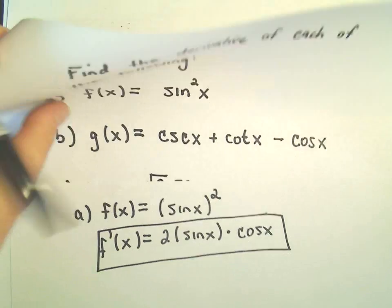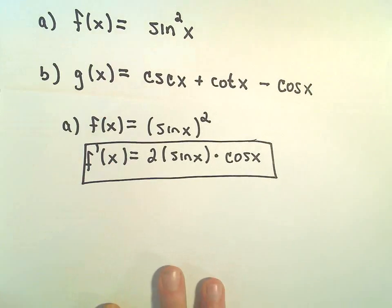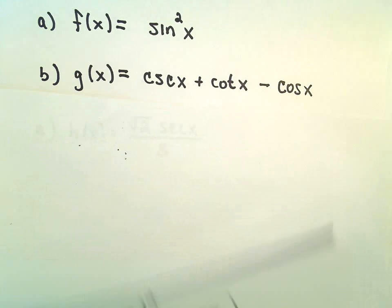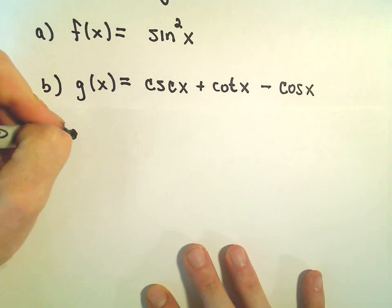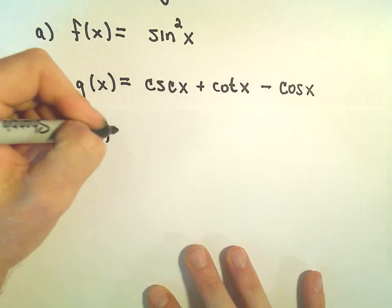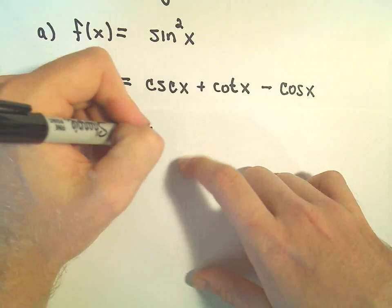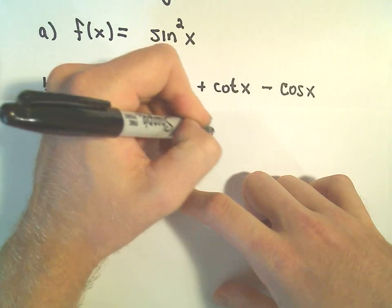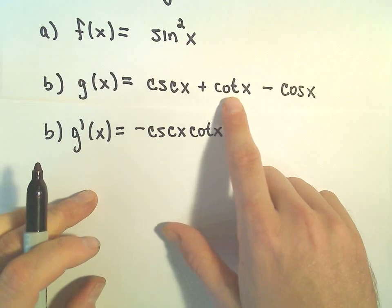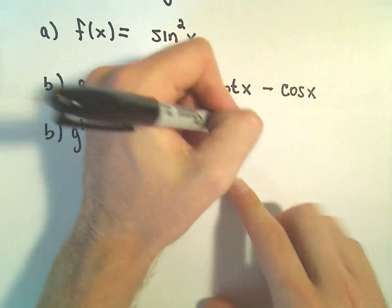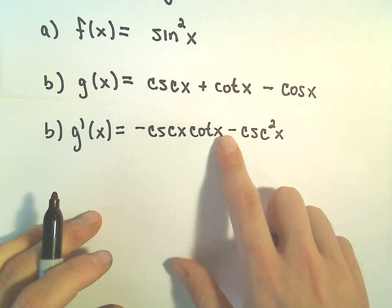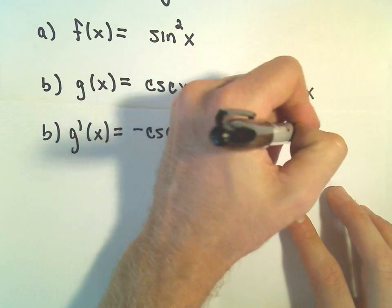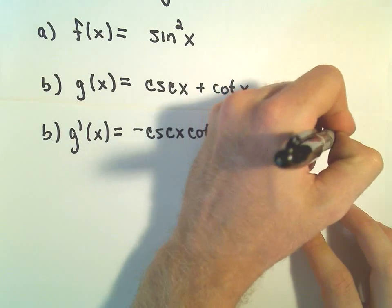Let's see. Part B. This is just a do-you-know-your-formulas type of problem. Let's flip this over. When we take the derivative of cosecant, that was negative cosecant x times cotangent x. The derivative of cotangent, well, tangent was secant squared, so this is negative cosecant squared x. So the derivative of cotangent is negative cosecant squared.